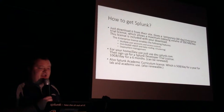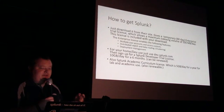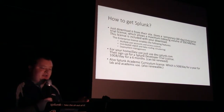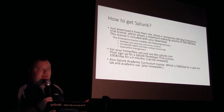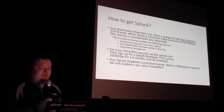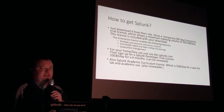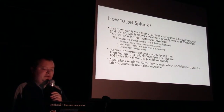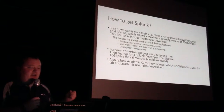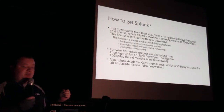How to get Splunk? Just download it from their site. When you download it, it gives you a temporary enterprise trial license with a maximum indexing volume of 500 megabytes a day, which you can go through pretty quickly. The enterprise license gives you multiple user accounts and user controls, distributed search, data routing, clustering, and deployment manager - which lets you deploy forwarders onto devices with Splunk. We actually use Chef to push out the configuration. For home dev, you go to dev.splunk.com - this is the developer trial license. It gives you the enterprise version with 10 gigs a day.